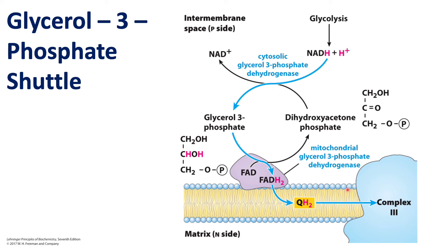This mechanism is very similar to what we see at complex number two in the ETC cycle. On complex number two, there is a transporter called succinate dehydrogenase, which also has an FAD bound to it. That FAD becomes reduced into FADH2, and it passes its electrons to ubiquinone to make ubiquinol — a very similar mechanism to what we see on complex number two of the ETC.